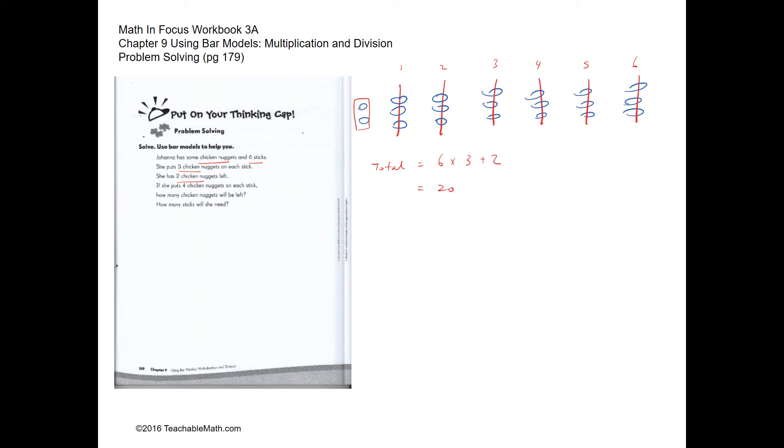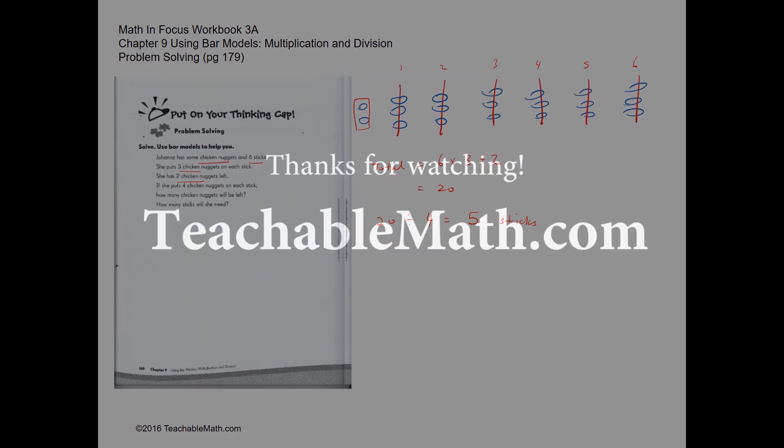So if instead of having three she has four on each stick, twenty divided by four, how many sticks would she have? She will need five sticks, and is there any remainder? There are no remainders, so there are no chicken nuggets left over.